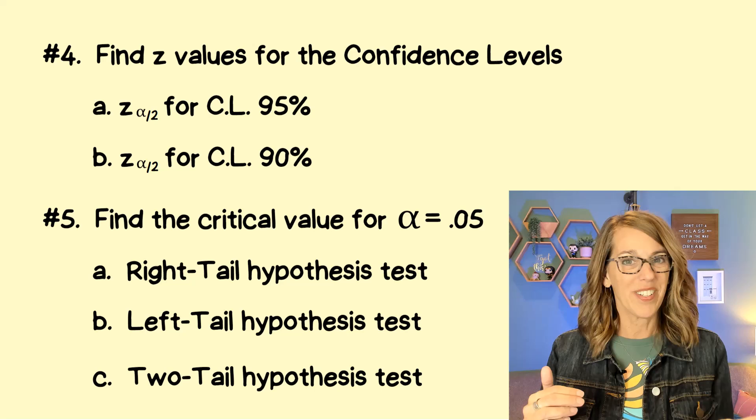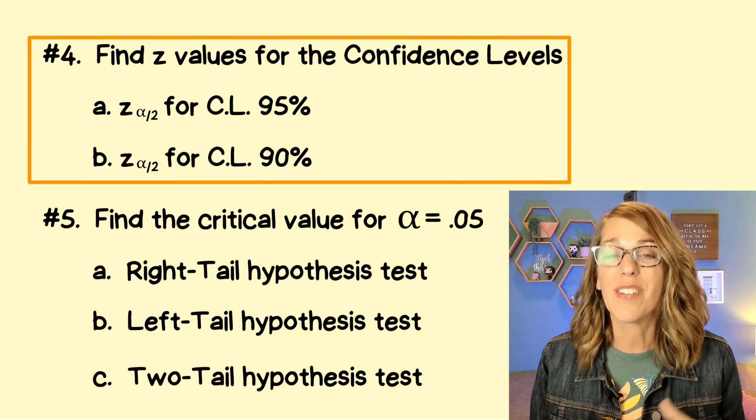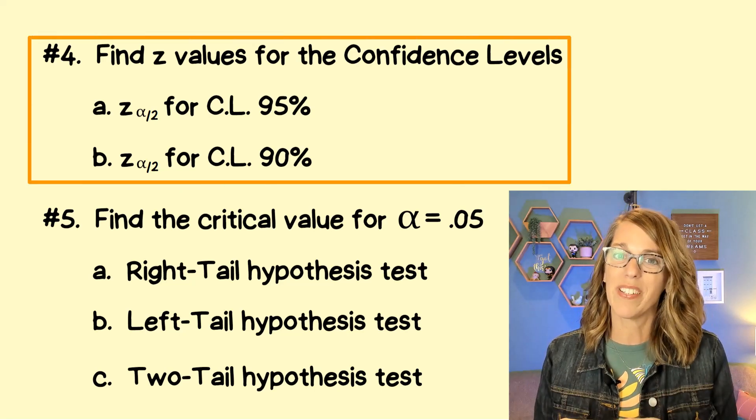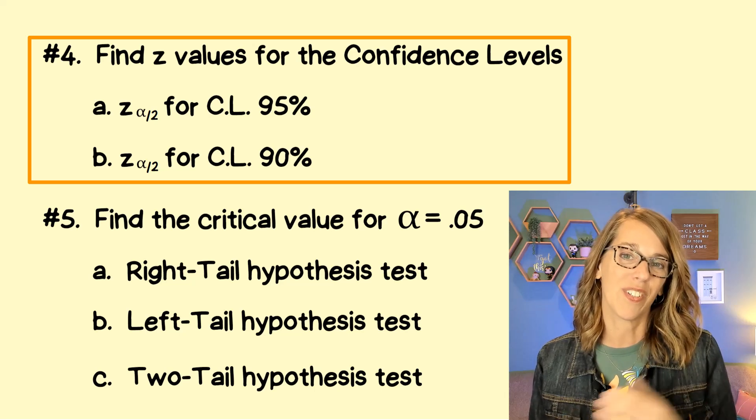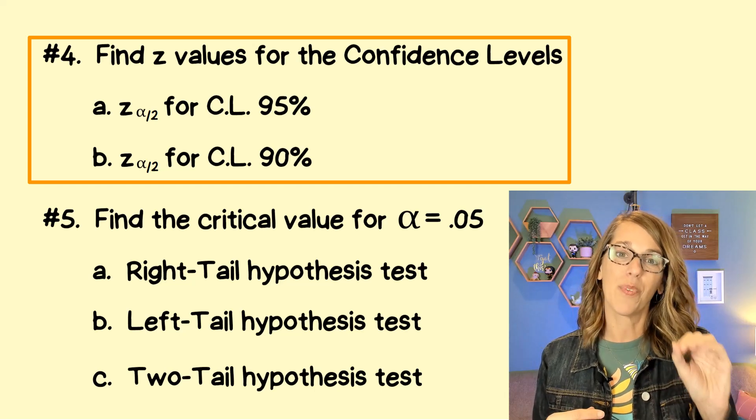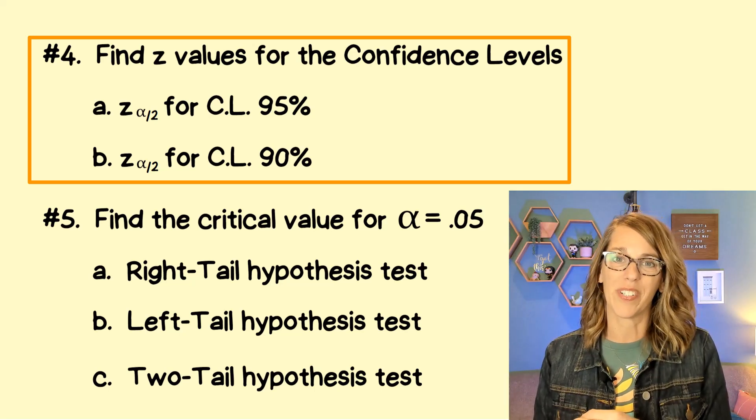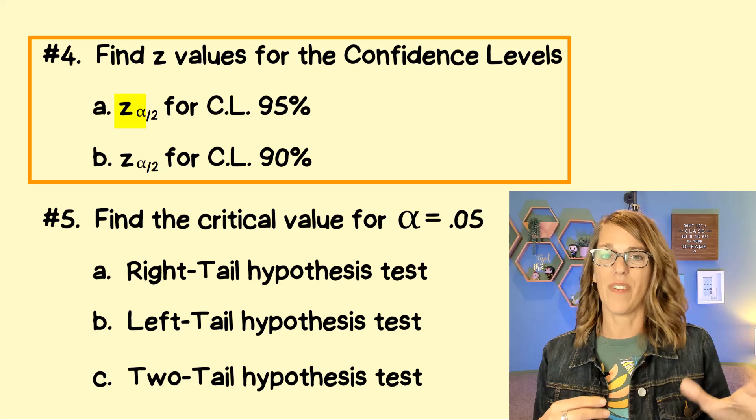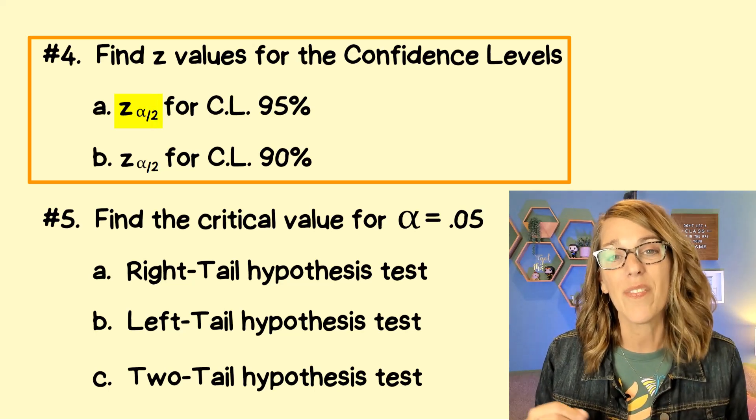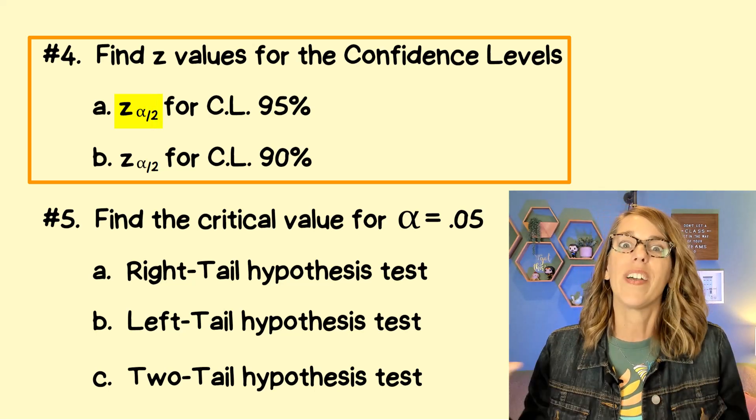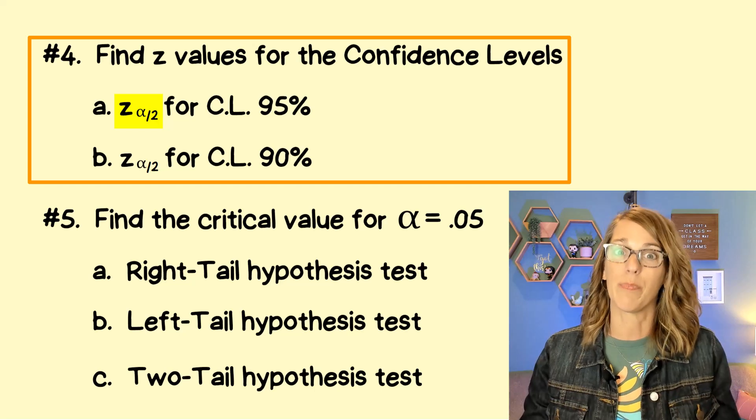We're ready for number four. Number four is actually super similar to what we just did with the inner areas. But this time we're applying it to confidence intervals. And for these confidence intervals, we want a confidence level or an inner area of in part a 95%. And it's given me this kind of funky notation of z alpha over two.